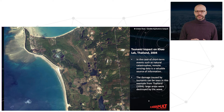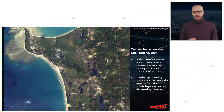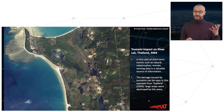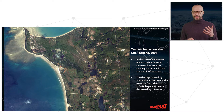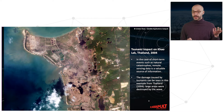Another use of high-resolution optical data is to evaluate the impacts of natural hazards, such as a tsunami. In this case, we can see a region in Thailand that was heavily affected by the 2004 tsunami. We see the image before the tsunami and after, and we can clearly appreciate the destruction caused by the tsunami itself.